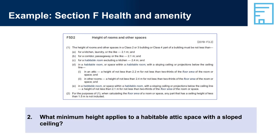Question 2: What minimum height applies to a habitable attic space with a sloped ceiling? A habitable attic space must have a minimum height of 2.2 metres for not less than two-thirds of the floor area of the room or space.